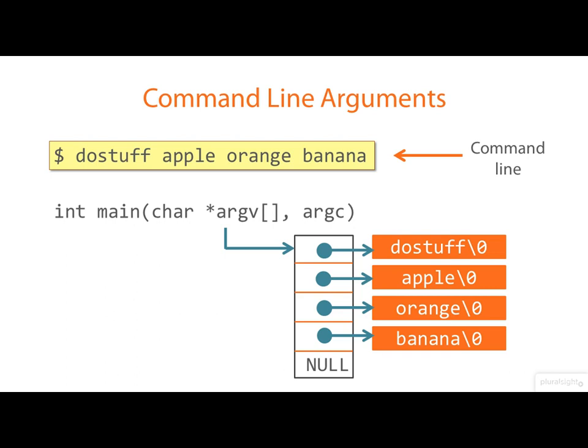The type of argv is pointer to pointer to char. And you'll sometimes see it declared as I've just shown here. But some programmers are squeamish about seeing two asterisks in a row, so I prefer the style that I've shown.